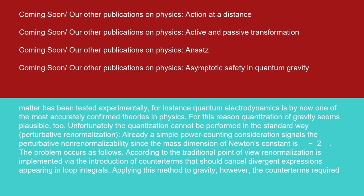Unfortunately, the quantization cannot be performed in the standard way. Perturbative renormalization, already a simple power counting consideration, signals the perturbative nonrenormalizability since the mass dimension of Newton's constant is minus 2. The problem occurs as follows. According to the traditional point of view, renormalization is implemented via the introduction of counterterms that should cancel divergent expressions appearing in loop integrals.